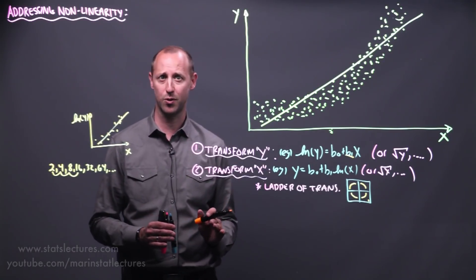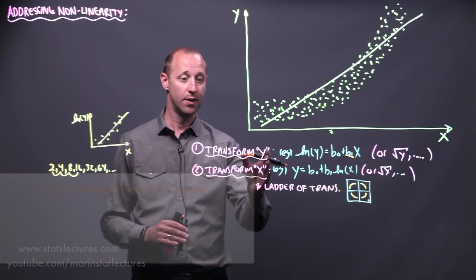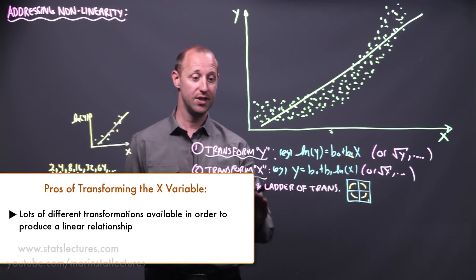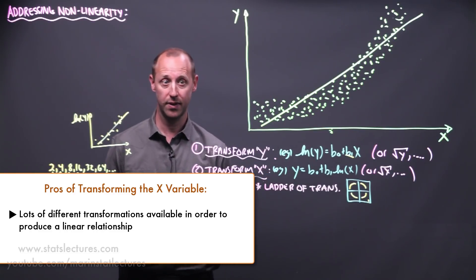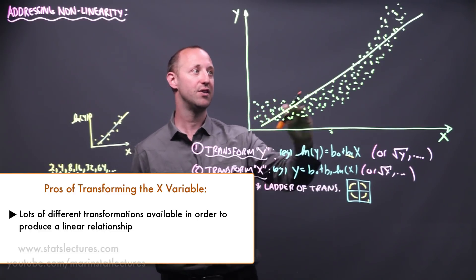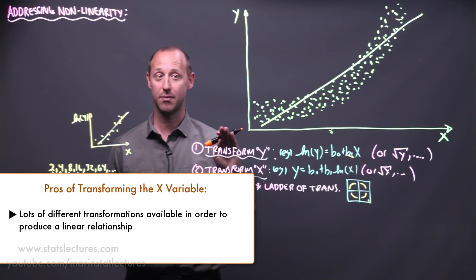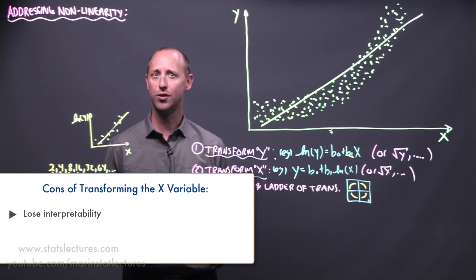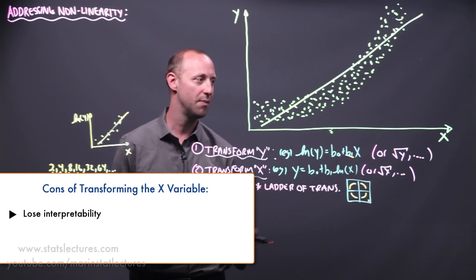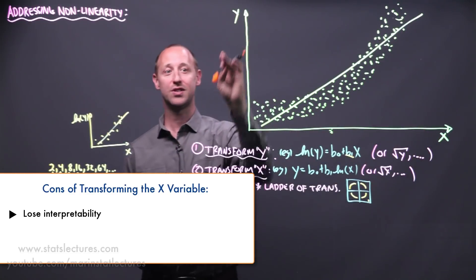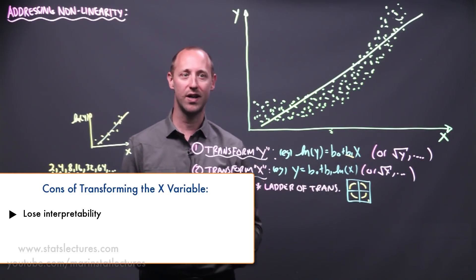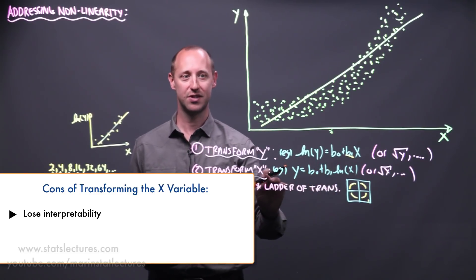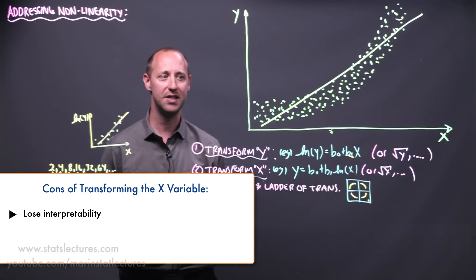This has pretty similar sets of pros and cons as transforming y. One of the nice things about it is there's lots of different transformations you can try. This, of course, does not fix increasing variability in y. If there's increasing variability in y, the only way to address that is by doing something to your y variable. The negative, again, is pretty similar. In an effect size model, you lose a bit of interpretability. Again, sticking on that example, what effect does years of experience have on your salary? If we take the log of x, our slope is going to tell us what effect does the log of years experience have on salary, which doesn't really have a nice clean interpretation.